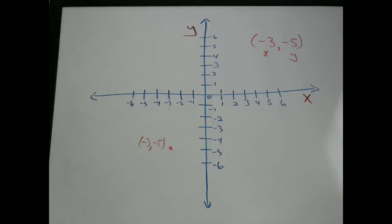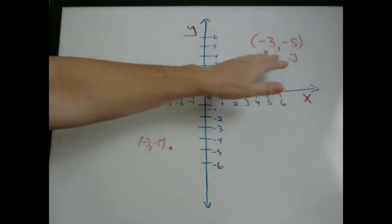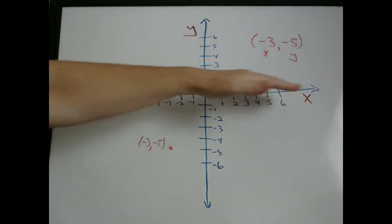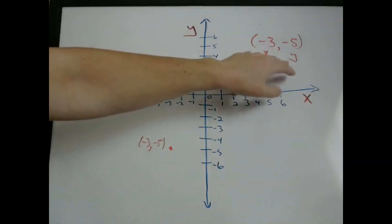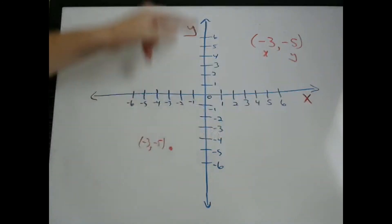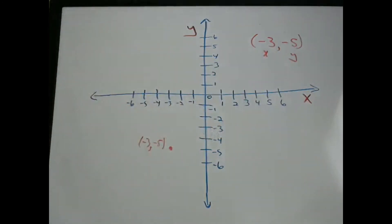So that's how you plot points. It's always the first number is your x — which way you're going to go left or right. Your second number is your y — are you going to go up or down?